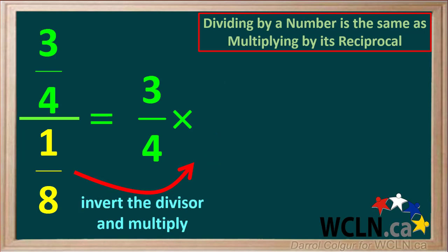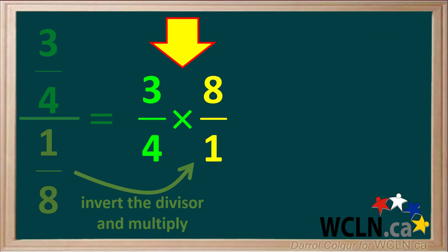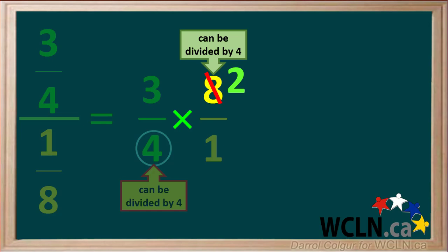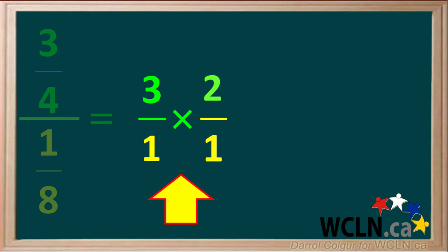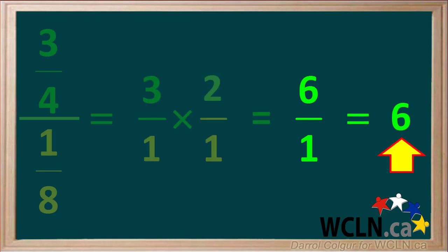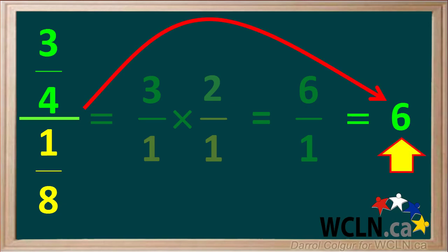Another way we can state what we're doing is, we invert the divisor and multiply. The divisor is 1 eighth, so inverting it gives us 8 over 1, which we multiply 3 quarters by. So now we need to multiply the fraction 3 quarters times 8 over 1. Notice that the diagonal numbers 8 and 4 can both be divided by 4, so we'll do that to simplify the multiplication. Dividing 8 by 4 gives us 2, and dividing 4 by 4 gives us 1. So we're left with multiplying the fractions 3 over 1 times 2 over 1, which gives us 6 over 1, which is equal to 6. So 3 quarters divided by 1 eighth is equal to 6.